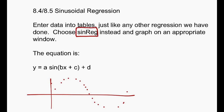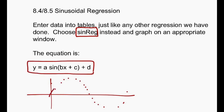The only thing different is you're going to pick sine regression, which is near the bottom of the list, and it'll give you the equation. The equation will be in a specific form, and then you can graph it and it would draw your sine graph accordingly to whatever the data points are.